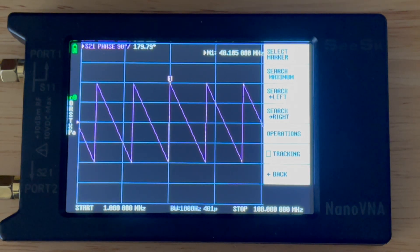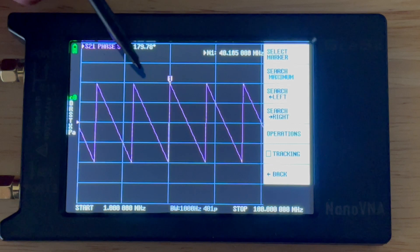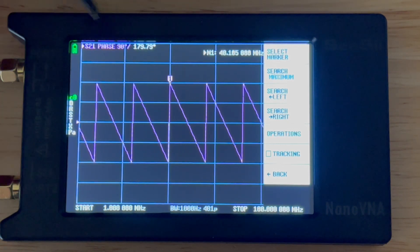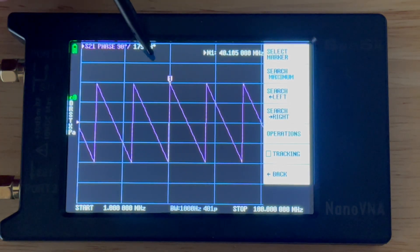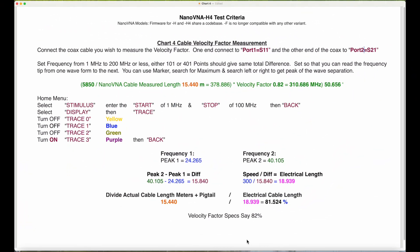And then I go search right and I get the next one, 40.105 megahertz. So that's how you would set up to get your velocity factor. The distance in megahertz between those two points—you can go either way, it doesn't matter. As long as it's one point, you can use the marker search option. You set it for maximum and then either search left or right to get the peak of the wave separation.